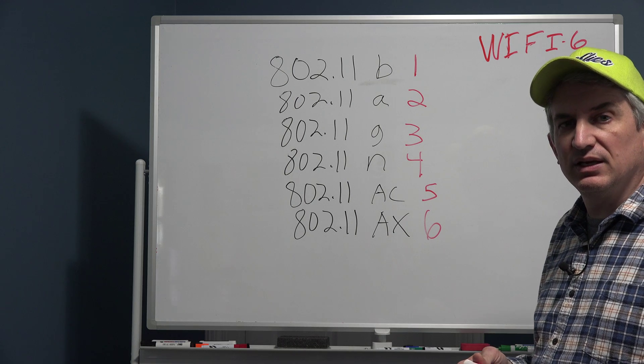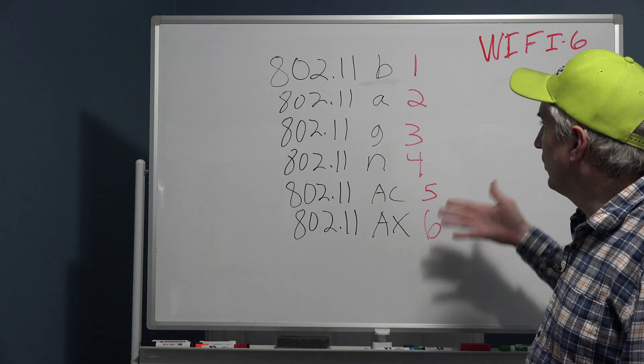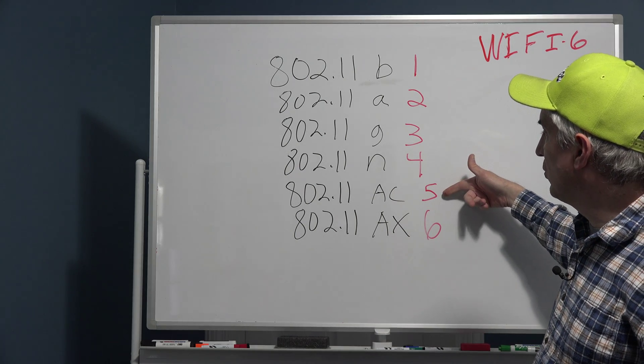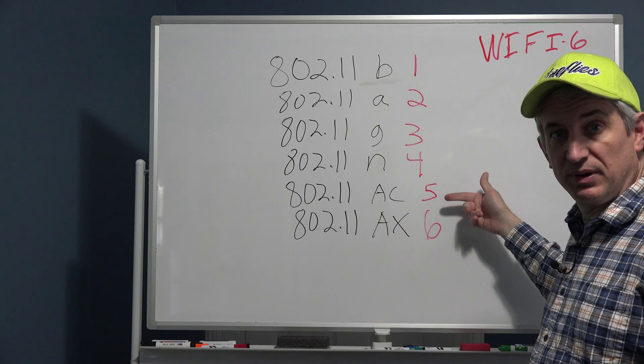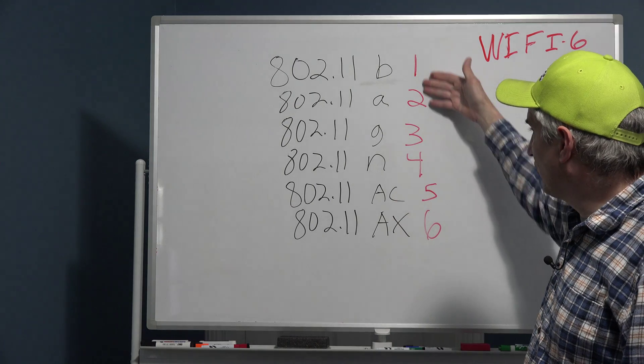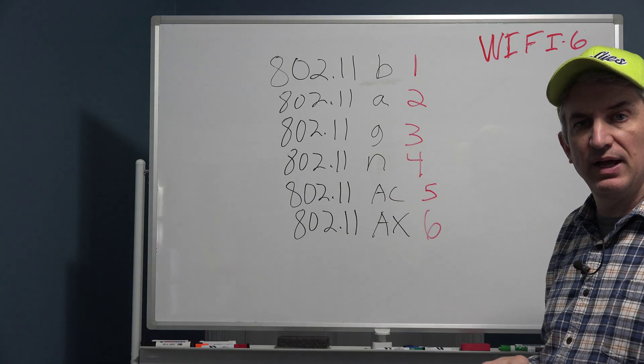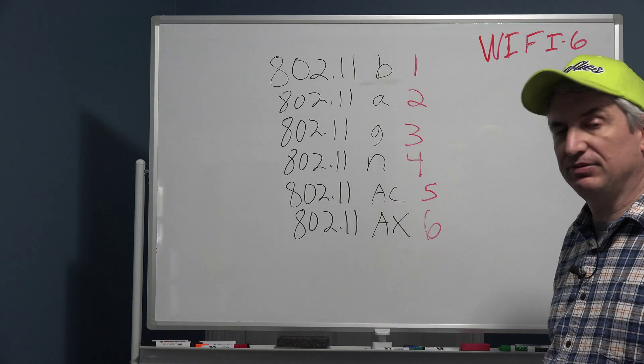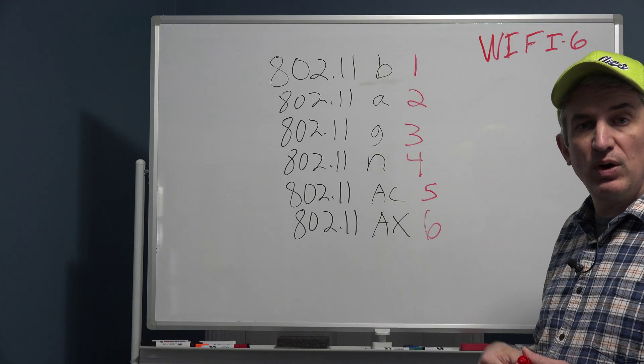Now the main advantage you get with WiFi 6 over AC, which is where we're coming from, is a couple of things, and these are all incremental improvements as you go down the line. But the biggest benefit you get with WiFi 6 over WiFi 5 is number one, the ability to handle multiple wireless devices.